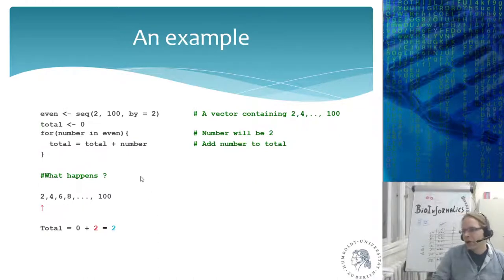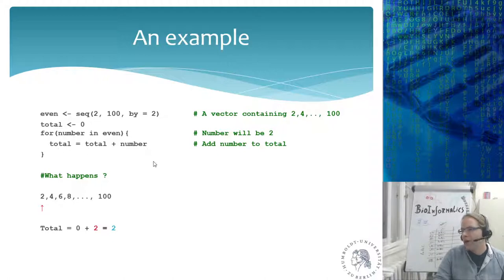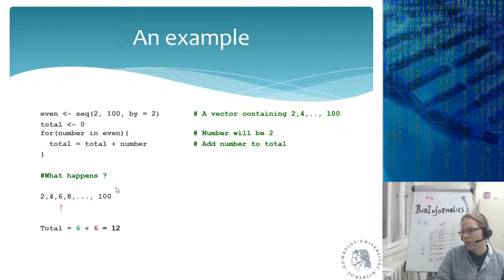A practical example: I define a variable 'even' containing all even numbers from 2 to 100 (using seq from 2 to 100 by 2). I want to add them all up, so before the loop I define 'total' as 0. Then: for number in even, total equals total plus number. First iteration: 0 plus 2 is 2; next: 2 plus 4 is 6; then 6 plus 6 is 12, and so on. You could also just use sum(even), but this helps you understand the for loop.